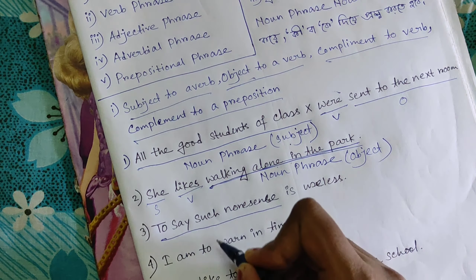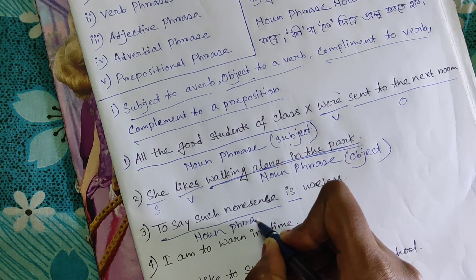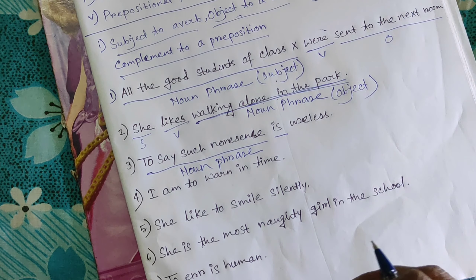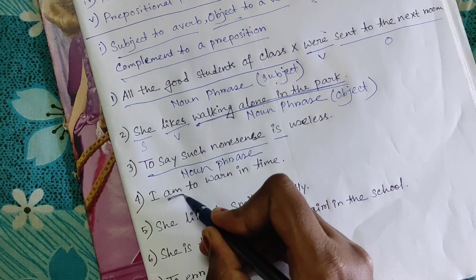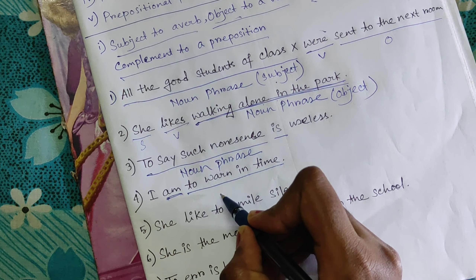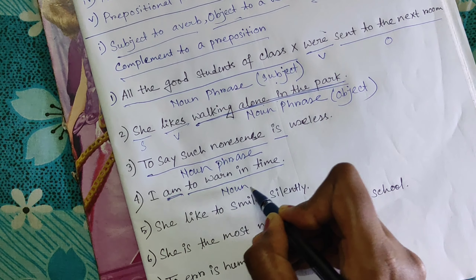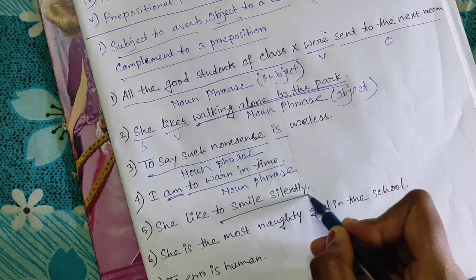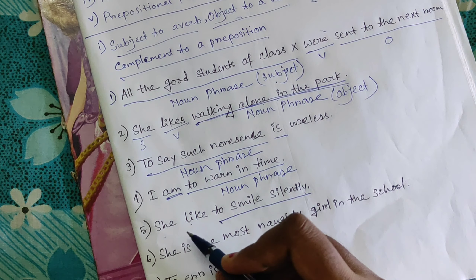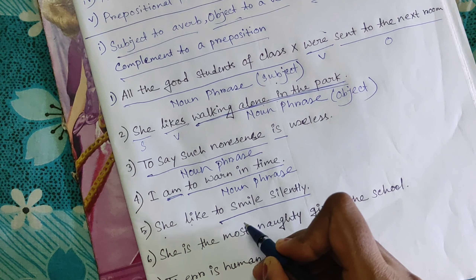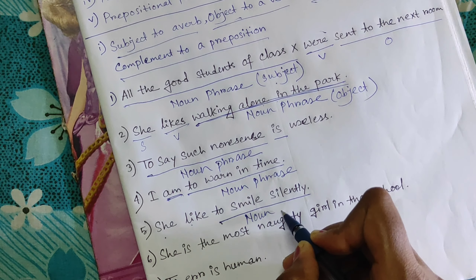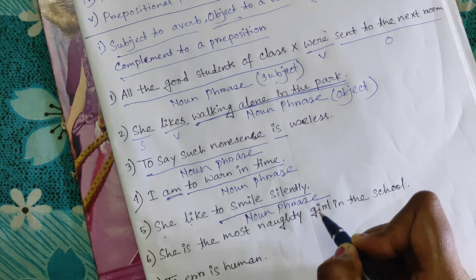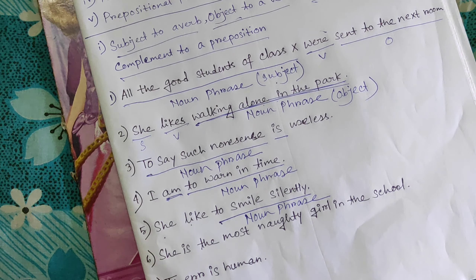The second type is the infinitive. For example: 'To say such nonsense' — this is a noun phrase functioning as the subject. Another example: 'She likes to smile silently' — here 'to smile silently' is the infinitive noun phrase functioning as the object.